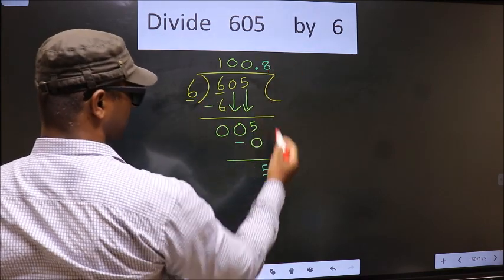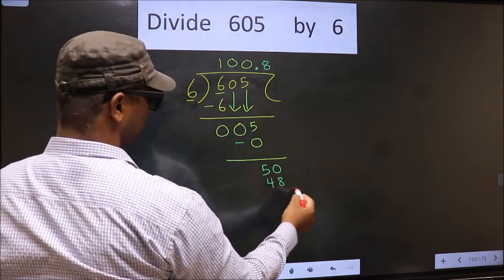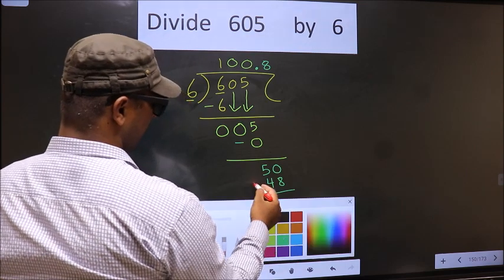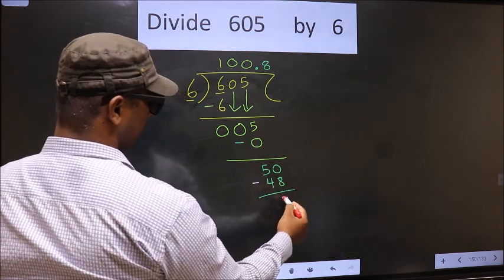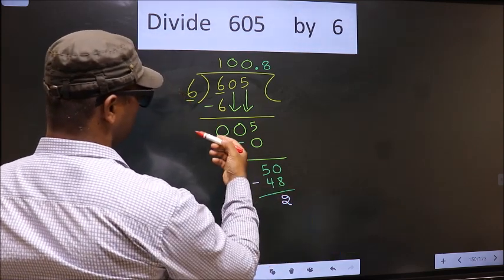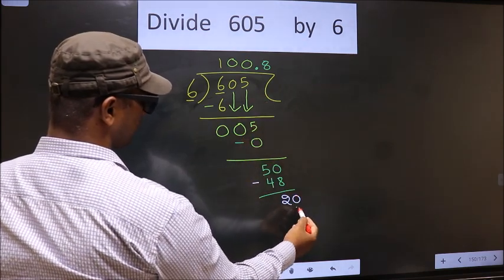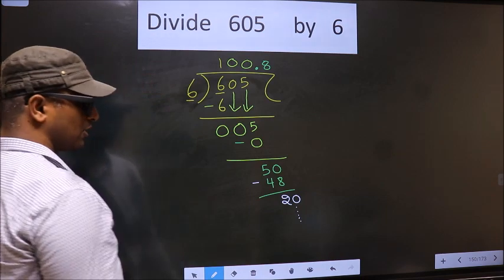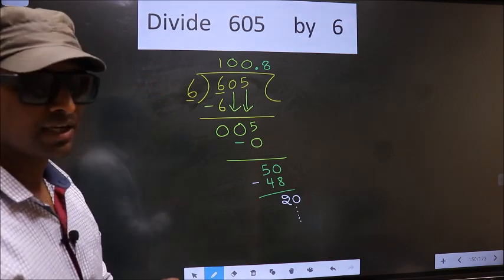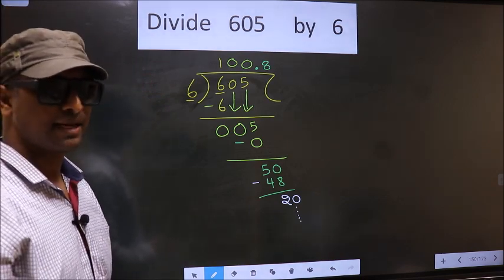Is 6 times 8 equals 48. Now you subtract 50 minus 48 equals 2. 2 smaller than 6. We already have decimal, so I directly take 0 and you continue the division. I am not doing that. Did you understand where mistake happens?